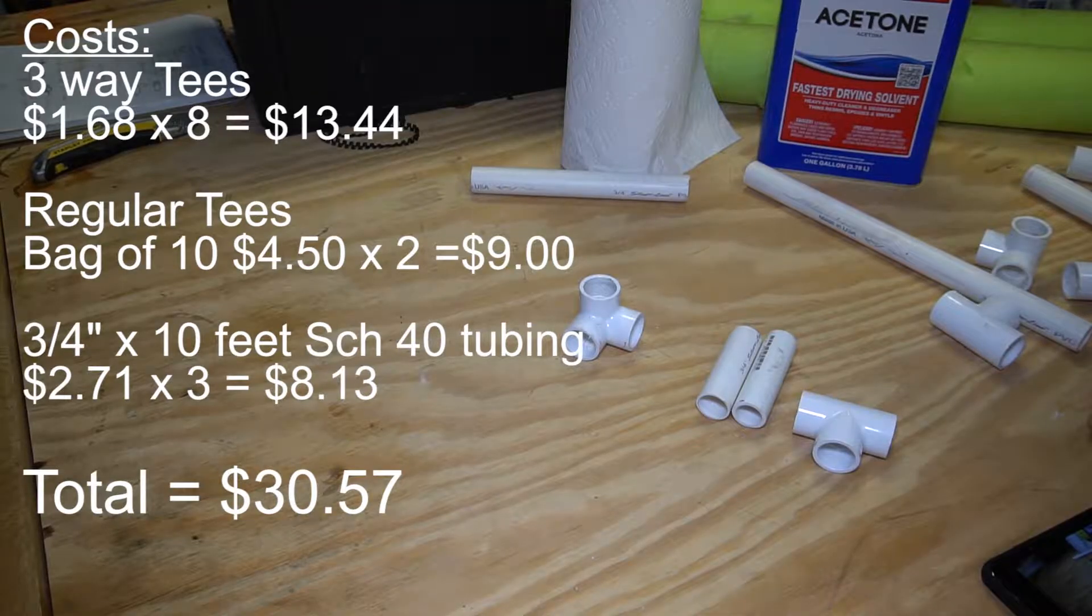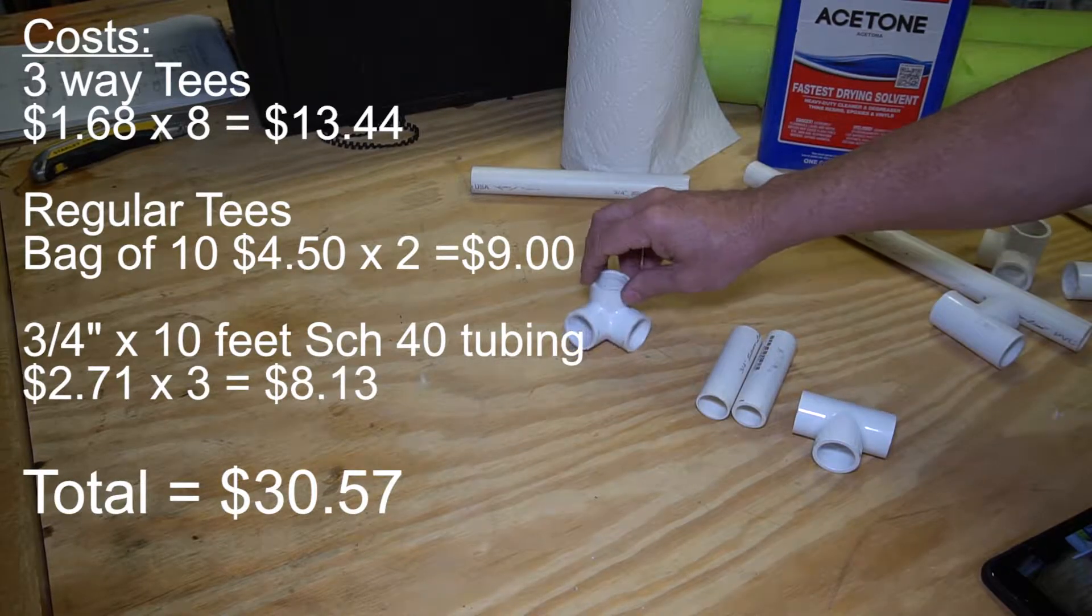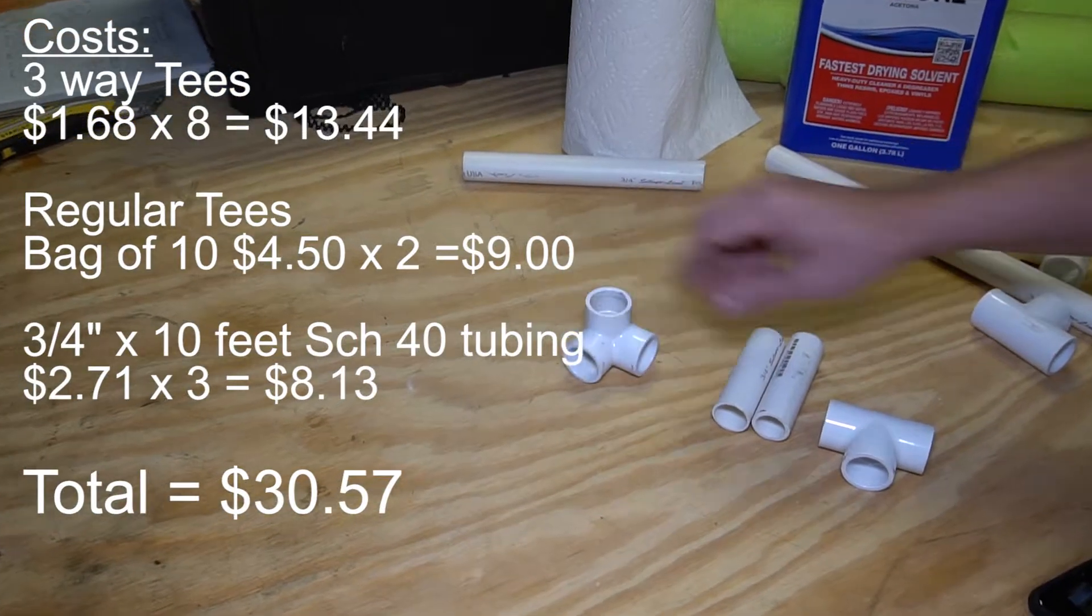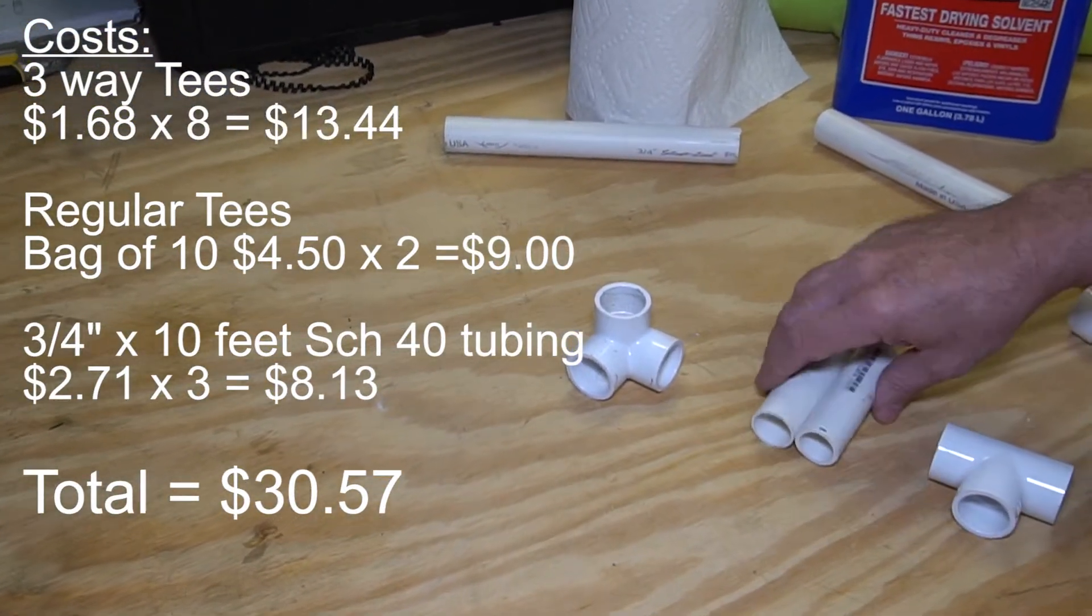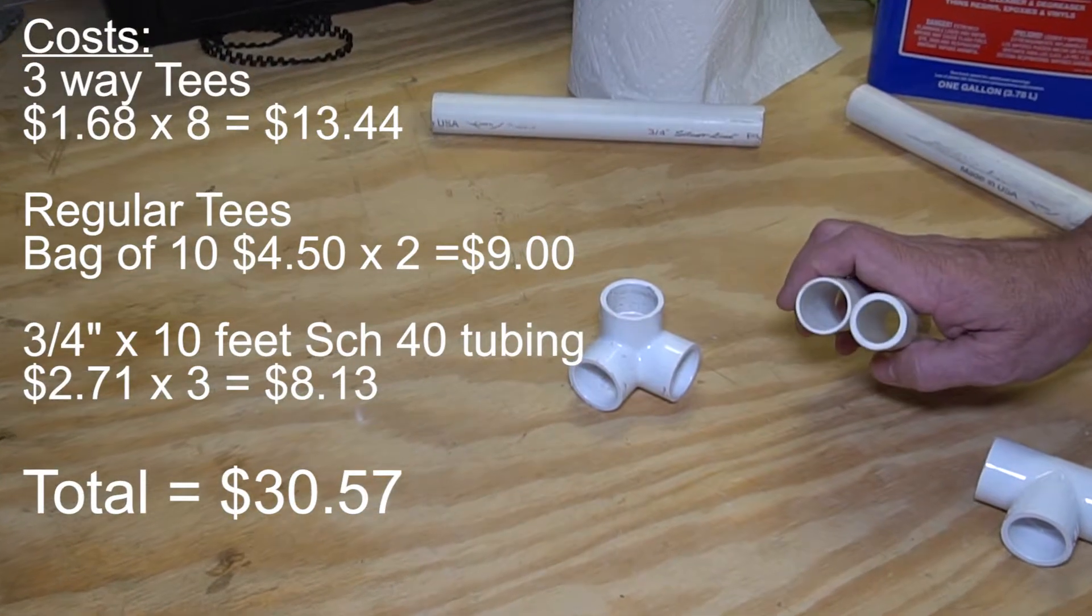Now I'm going to go through the assembly process for putting together the filament rack. You're really going to need three basic components: a three-way tee, a regular tee, and PVC tubing.